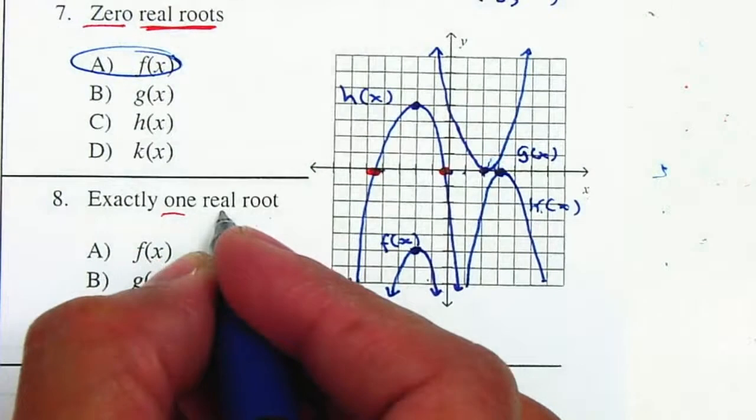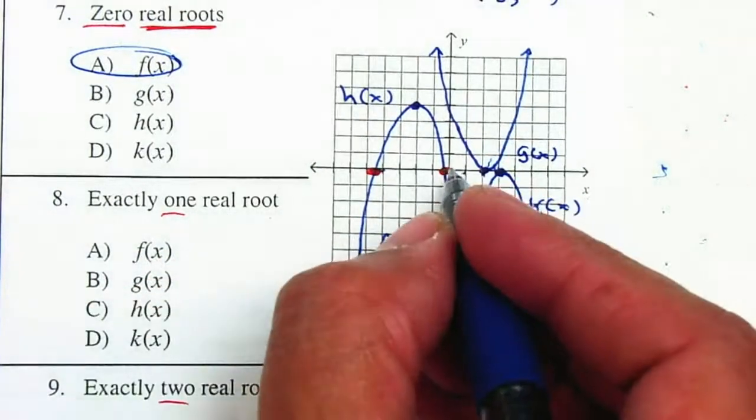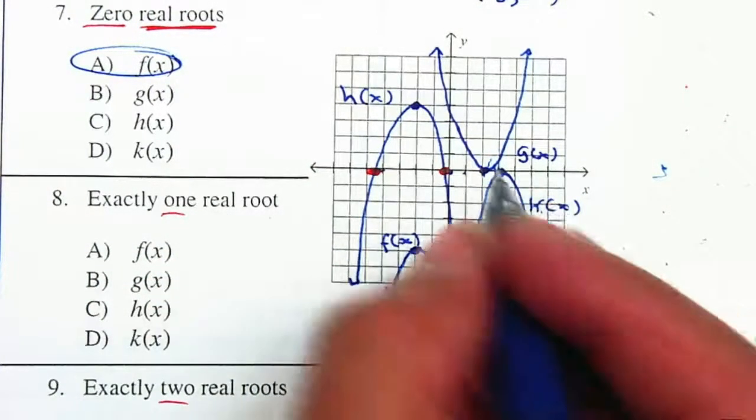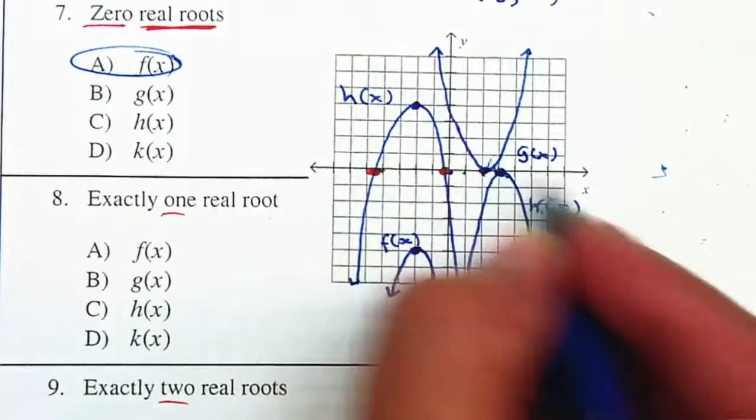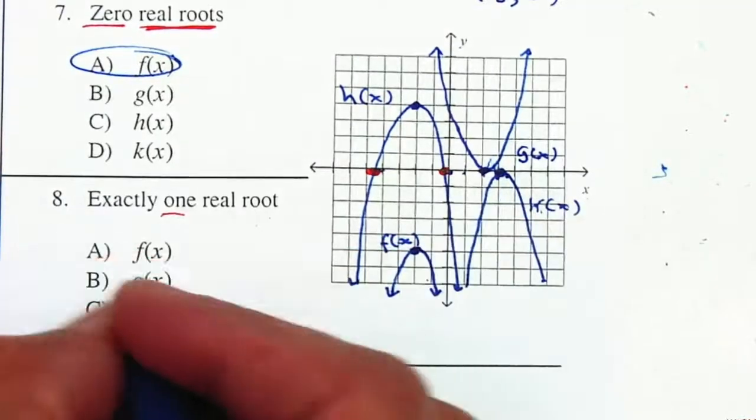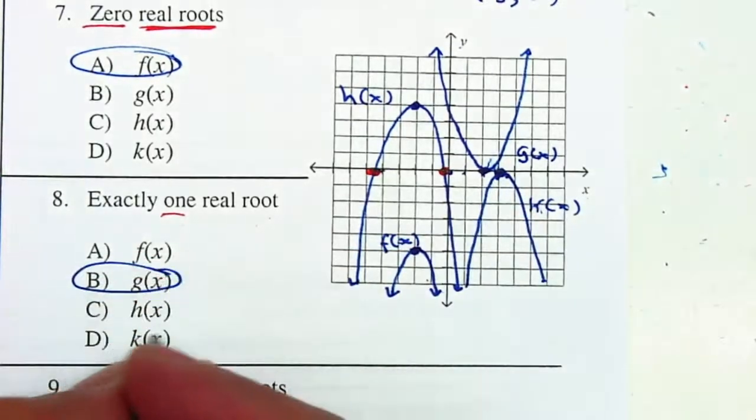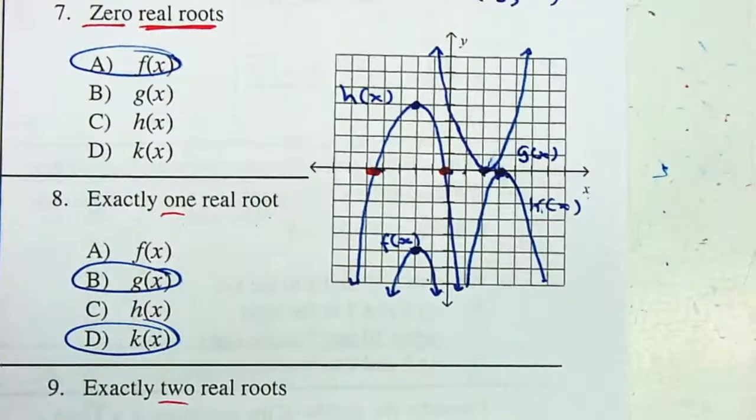Exactly one real root. One real root will be either g of x or k of x. G of x or k of x.